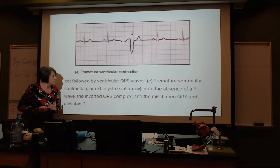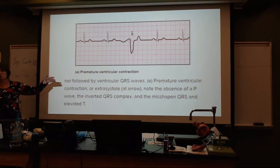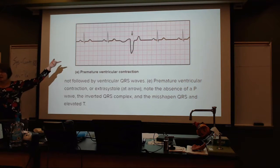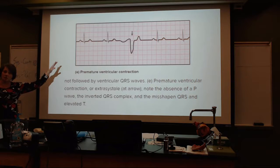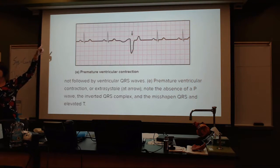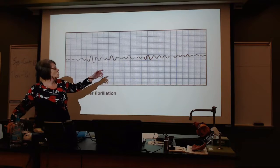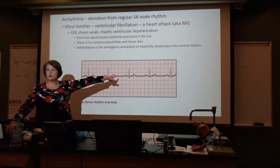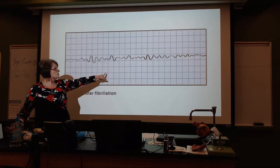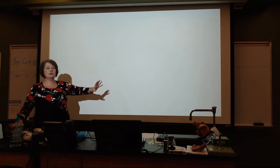Another condition would be premature ventricular contraction. This is one where you're noticing the line is dipping down from the baseline significantly. So based upon looking at what should be the norm, if you do something with the EKG, you can look at it and notice somewhere something isn't matching up and there's something going on.